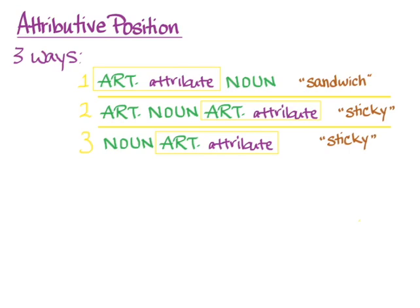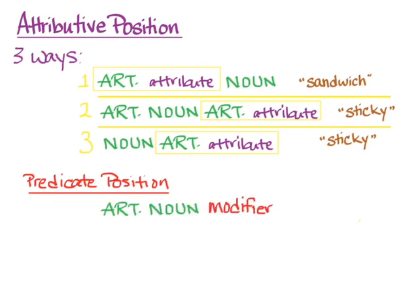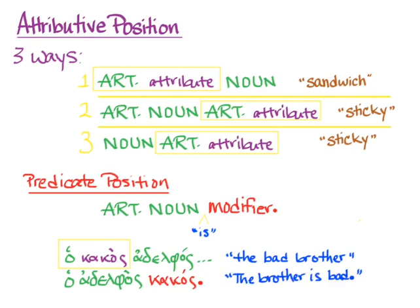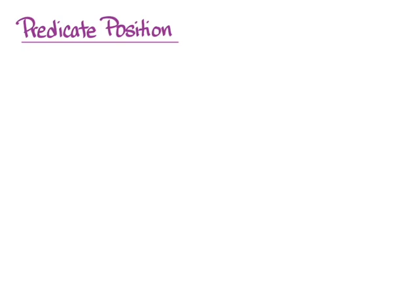If you have an article, a noun, and an attribute, but the article is not in front of the attribute, what you have is predicate position. The article is there and it agrees with the noun, but the modifier doesn't have the article immediately preceding it. If you have an article, a noun, and a modifier all in the nominative, you may actually have a whole sentence where you supply a verb telling you that the noun is whatever the modifier is. So ha kaka adelphas is 'the bad brother' in attributive position, but ha adelphas kakas — the article is not immediately preceding the modifier — is a whole sentence: 'the brother is bad.' This is predicate position.